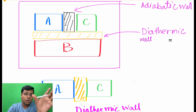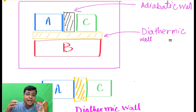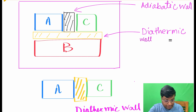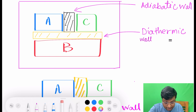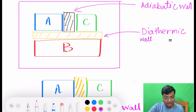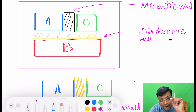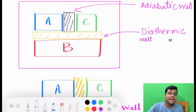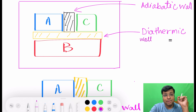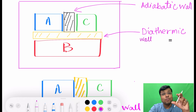An adiabatic wall acts like an insulator — for example, a piece of wood or glass. So A and B are connected by a diathermic wall, B and C are also connected by a diathermic wall, but A and C are connected by an adiabatic wall. After some time, A and B will exchange heat and their temperatures will equalize. Similarly, B and C will also exchange heat and their temperatures will equalize. So A and B will be in thermal equilibrium, and B and C will also be in thermal equilibrium.